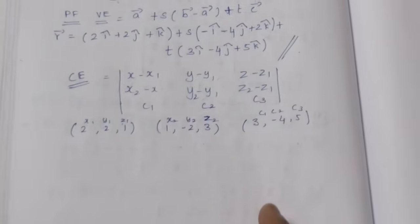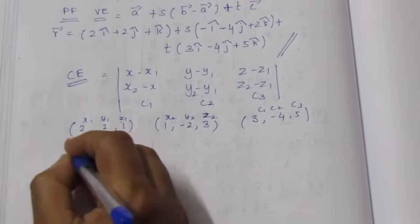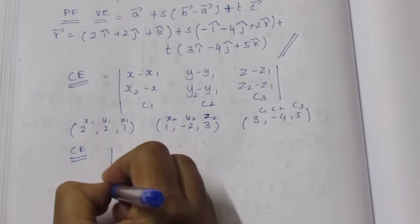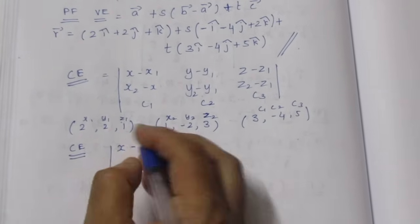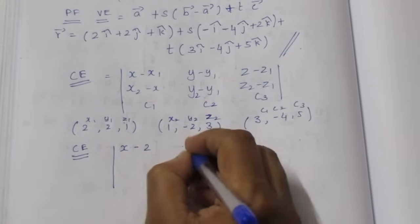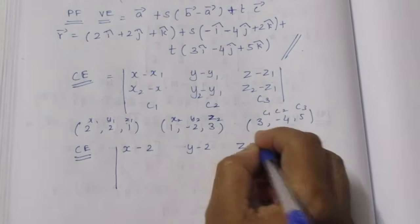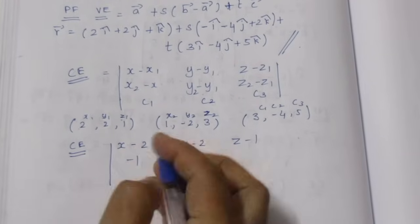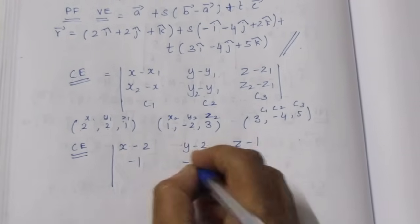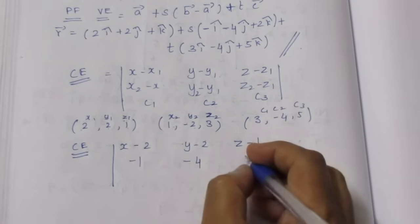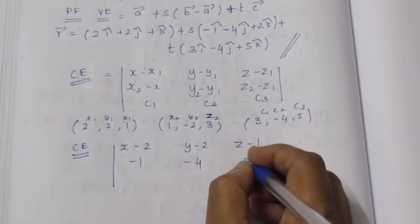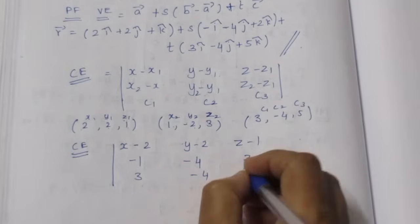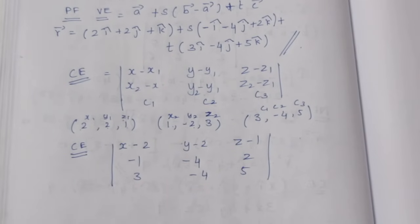Now we find the determinant value. The first row is (x minus 2, y minus 2, z minus 1). The second row is (x2 minus x1) values: (minus 1, minus 4, 2) after subtraction. The third row is c vector points: (3, minus 4, 5). We expand this determinant.